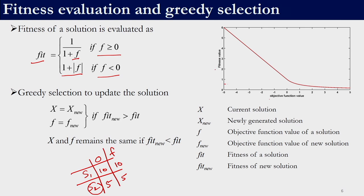This graph shows fitness on the y-axis and objective function value on the x-axis. As the objective function value increases, the fitness value actually decreases — they are inversely related. So if we are solving a minimization problem, we would take the solution with lower objective function value as better. But since we work with fitness which is inversely related, we select the solution with maximum fitness. In greedy selection we select the solution with higher fitness, not lower fitness, unlike other algorithms where objective function value directly corresponded to fitness.